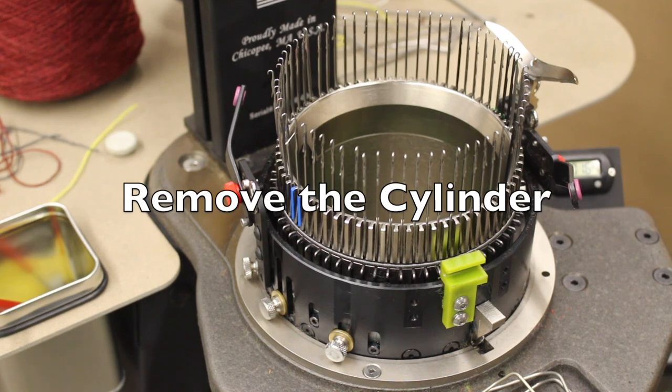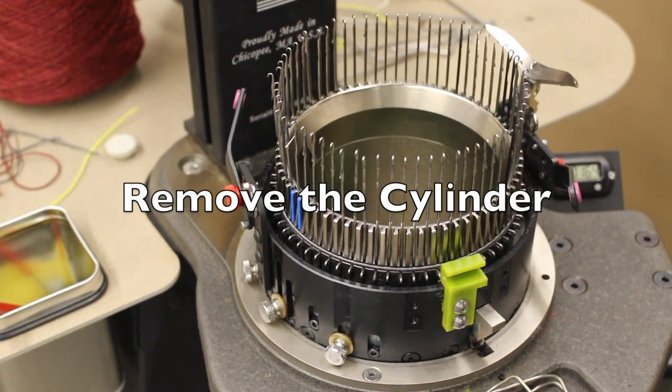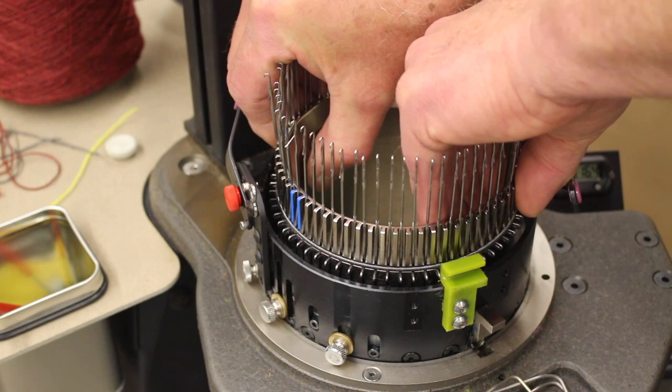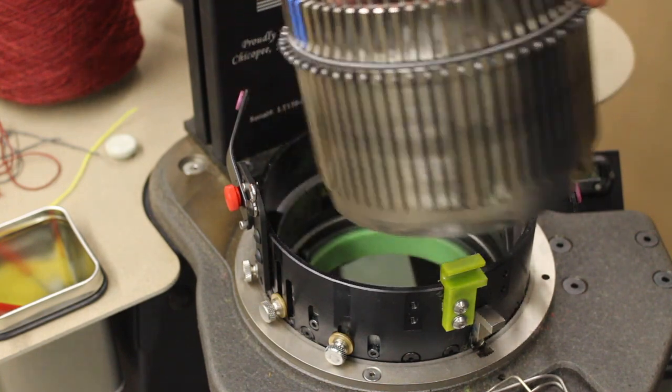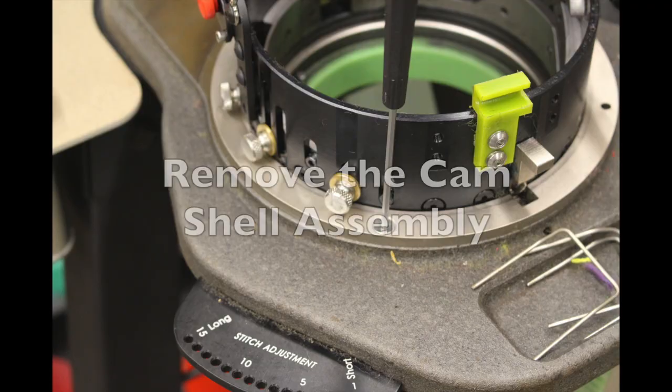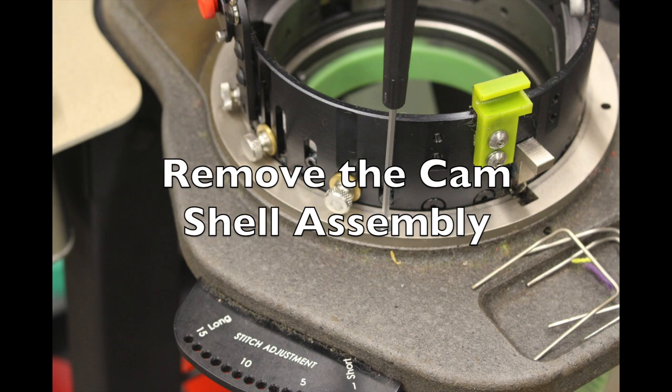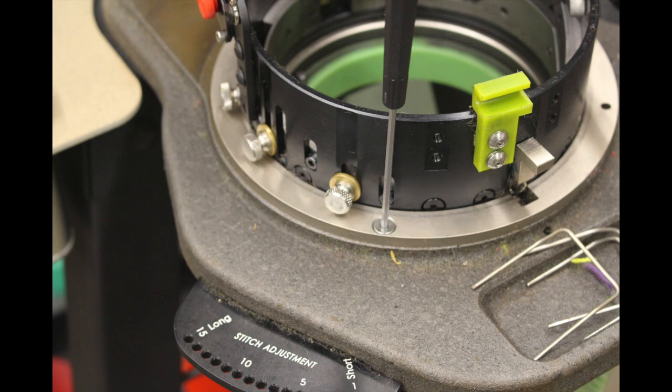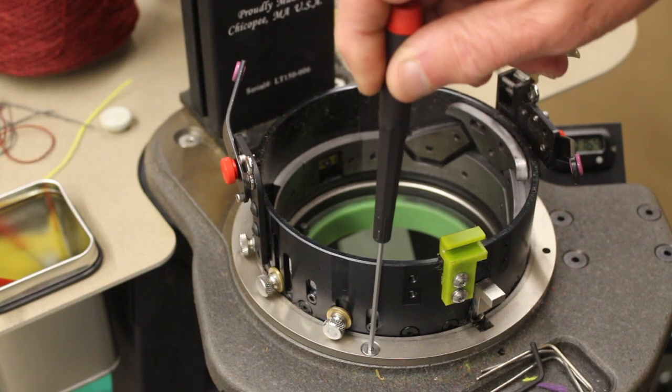Remove the cylinder and carefully place it on a nearby table or shelf for storage. Next, remove the three screws that hold the cam shell down using a 3/32 wrench provided with your machine.